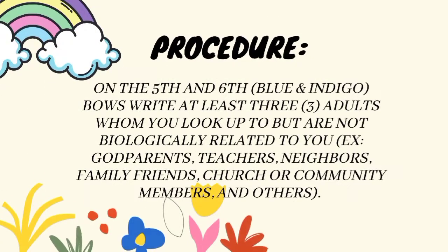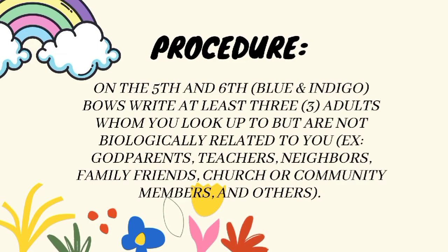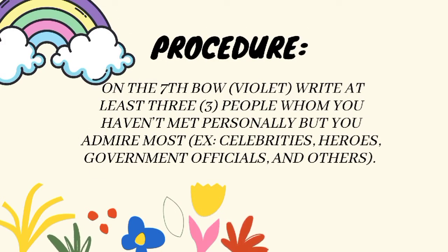Next, on the 5th and 6th bows — blue and indigo — write at least three adults whom you look up to but are not biologically related to you, such as your godparents, teachers, neighbors, family friends, churchmates, or community members. On the seventh bow — Violet — write at least three people whom you haven't met personally but you admire most, for example celebrities, heroes, government officials, and others.